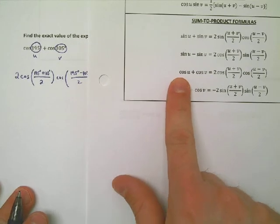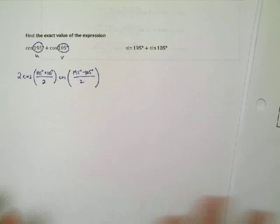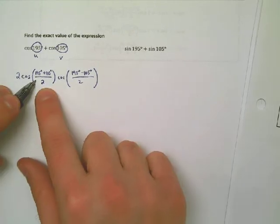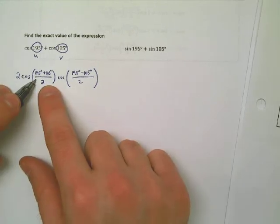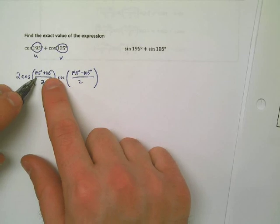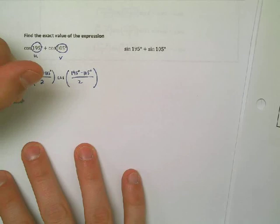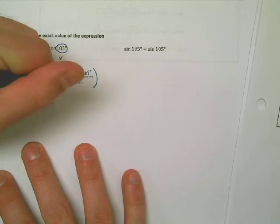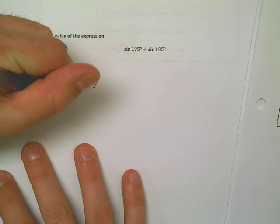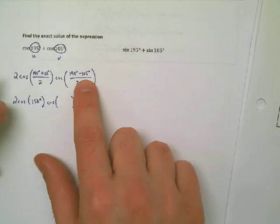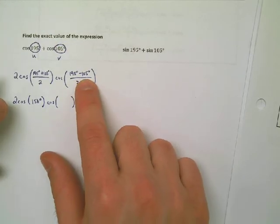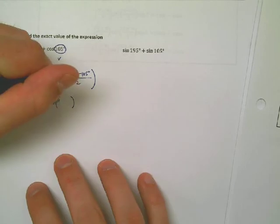I need to simplify what's inside the expression first. Let's see, 195 plus 105, that'd be 300 degrees. 300 divided by 2 is 150. So it's really the same thing as 2 times the cosine of 150 degrees times the cosine of 195 minus 105 is 90. 90 over 2 is 45. This is great because now those are familiar angles.